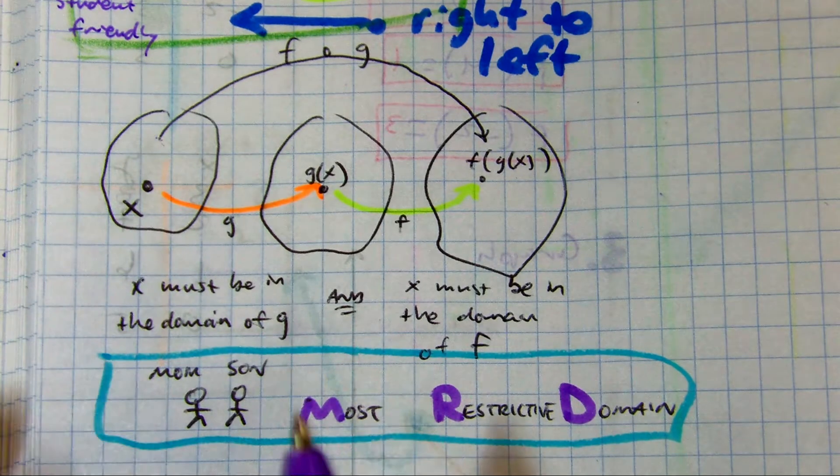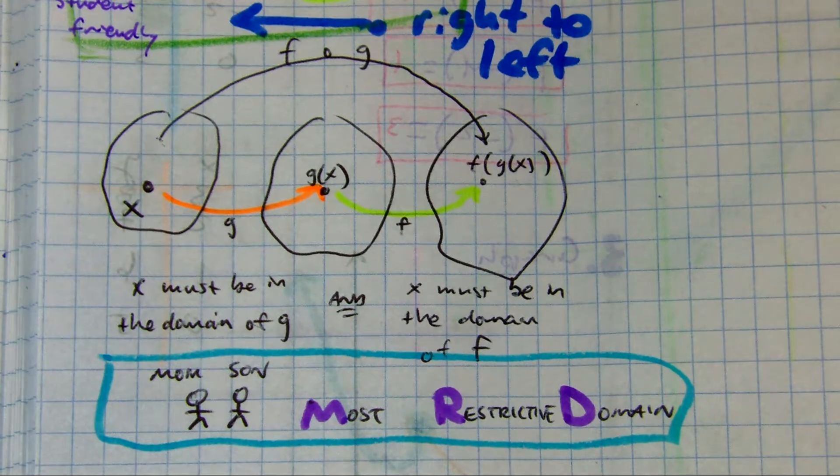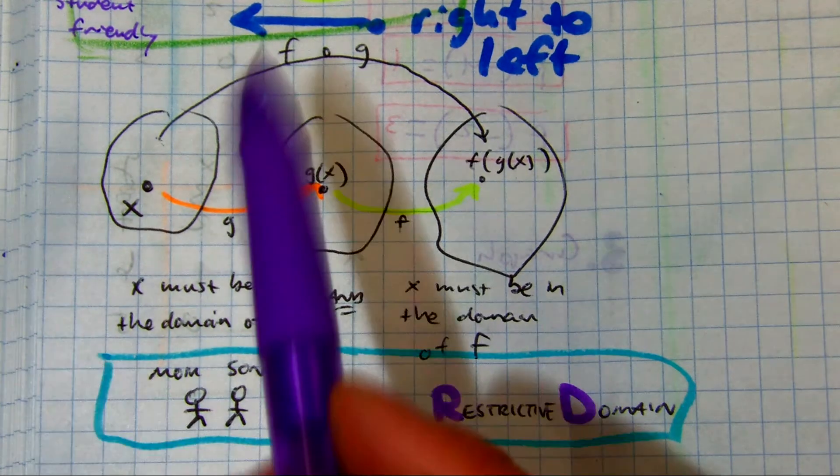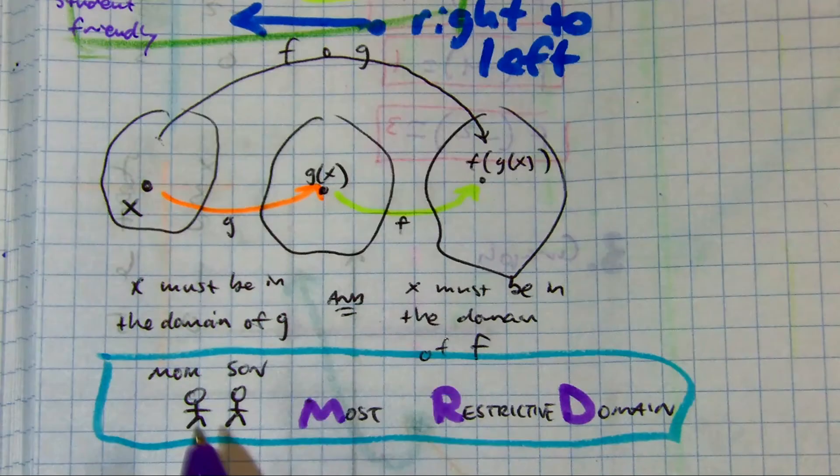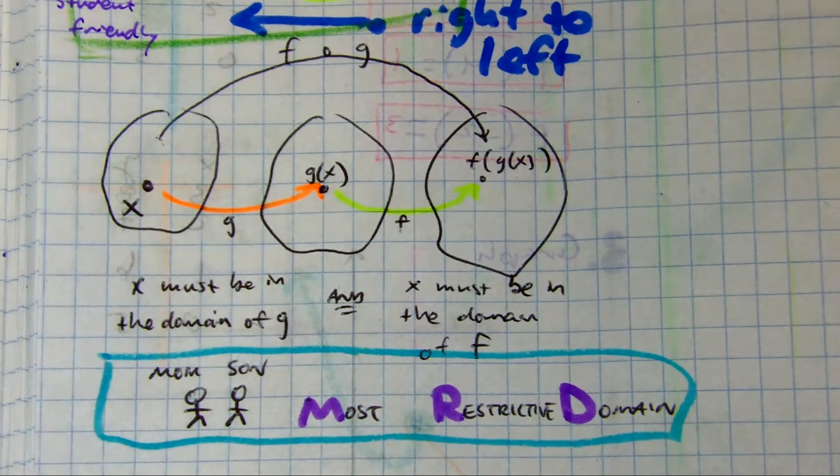And so that kind of happens with our domains of our functions. Super conceptual, but basically you find the domain of f, you find the domain of g, and then which one is the most restrictive? That's the one you use. If they're both kind of restrictive, then you can kind of combine them and we see our answer.